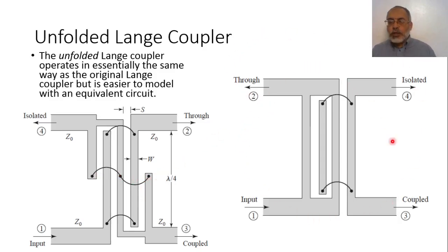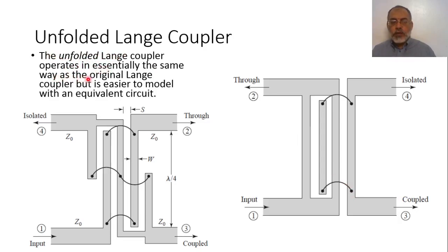This type of unfolded Lange coupler is easier for fabrication because we have fewer bonds. In the conventional Lange coupler we have four wire bonds, but in the unfolded version we have only two wire bonds. The unfolded Lange coupler operates in essentially the same way as the original Lange coupler, but it is easier to model with an equivalent circuit and is easier for fabrication. We are going to present the analysis of the unfolded Lange coupler.